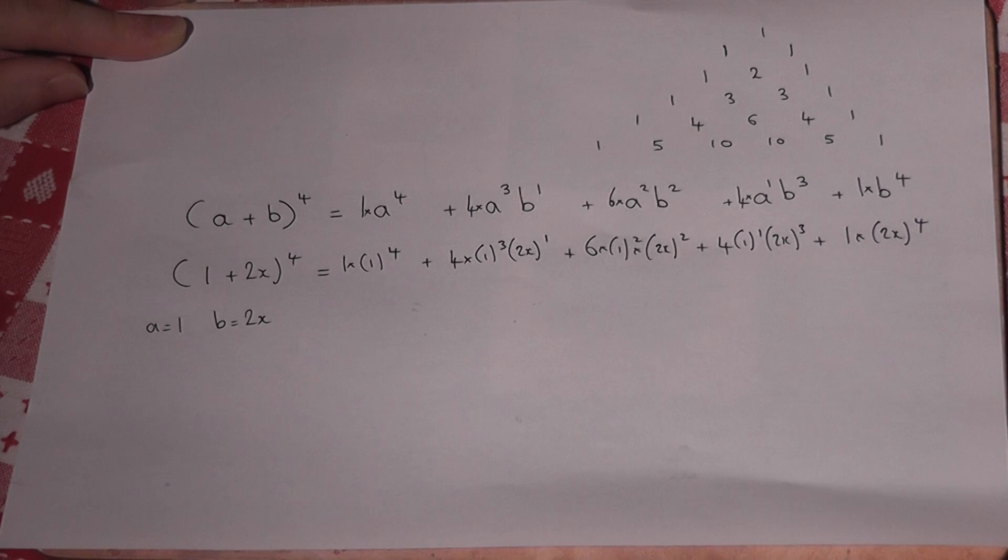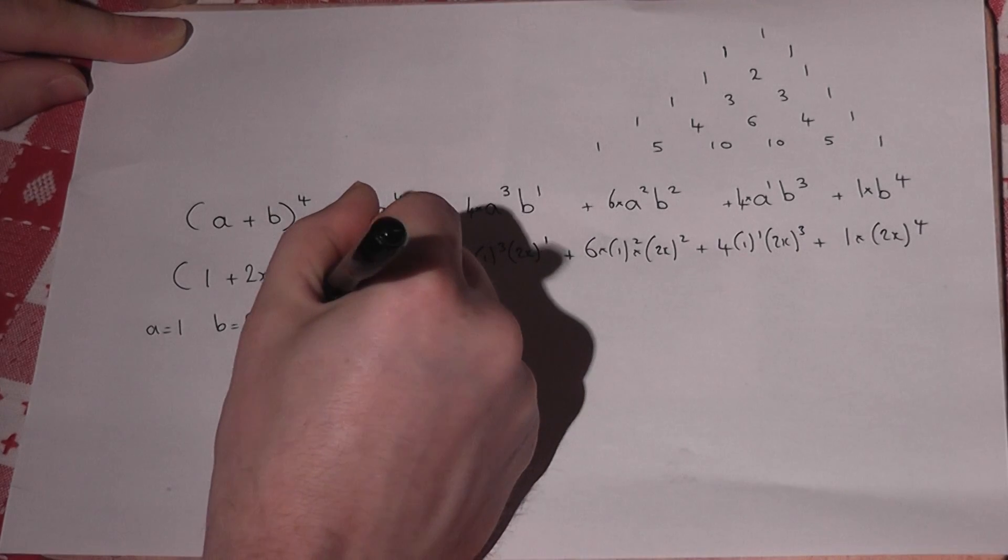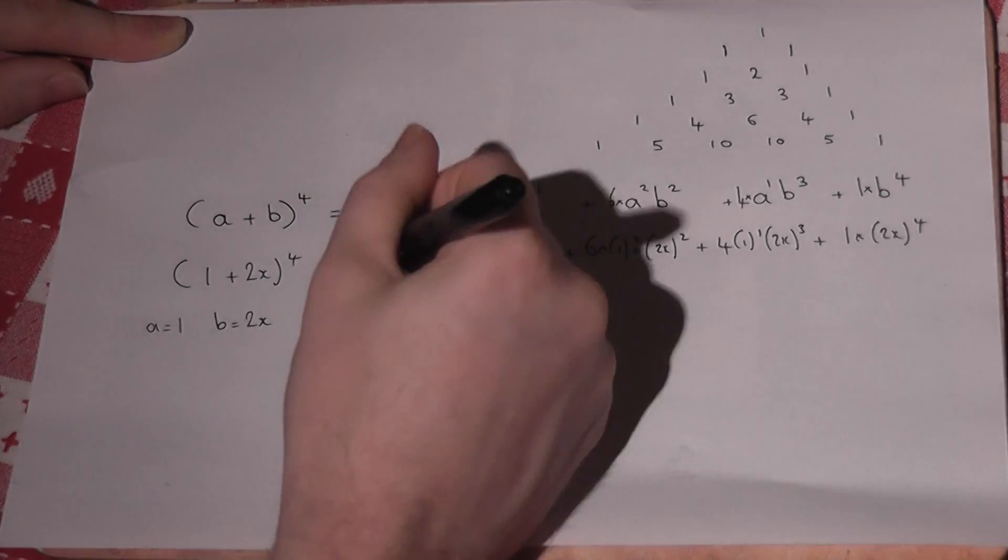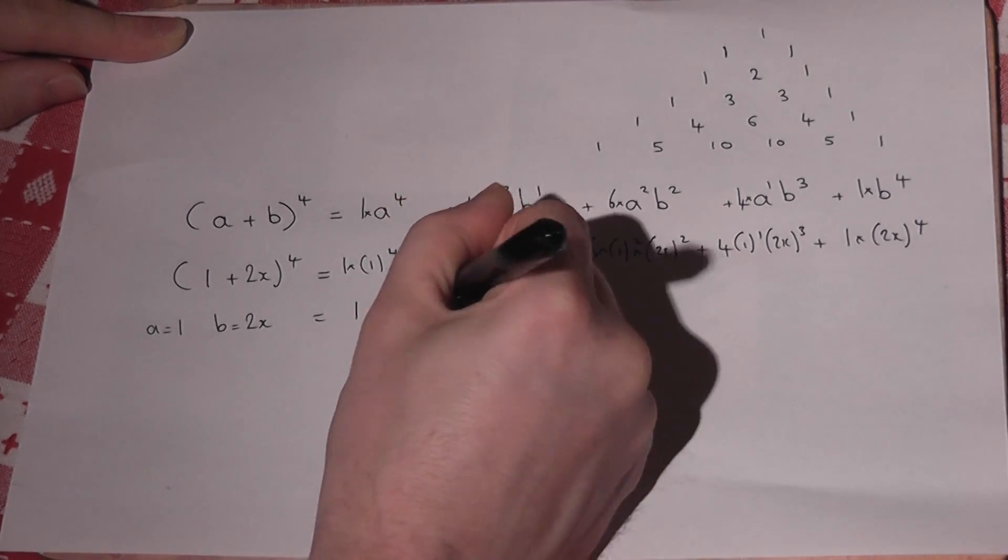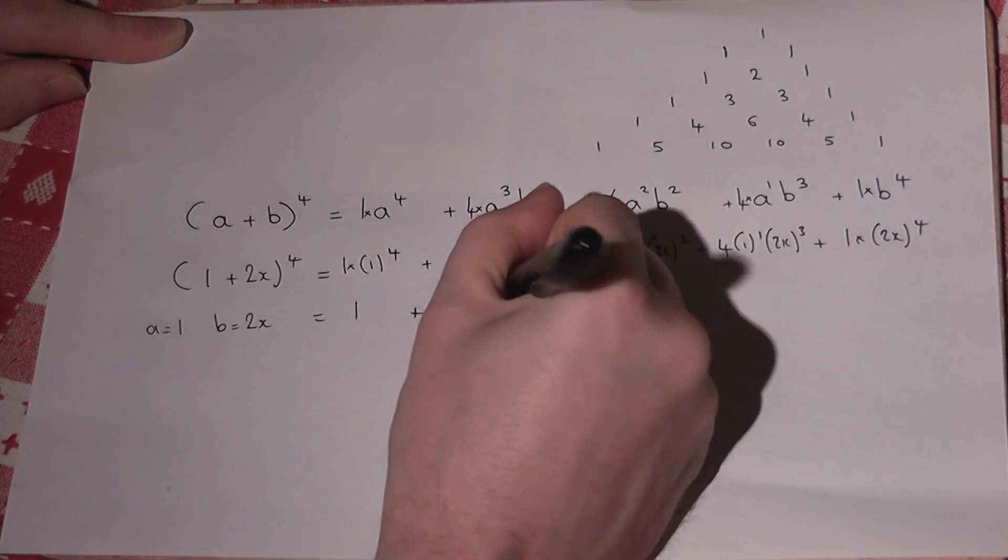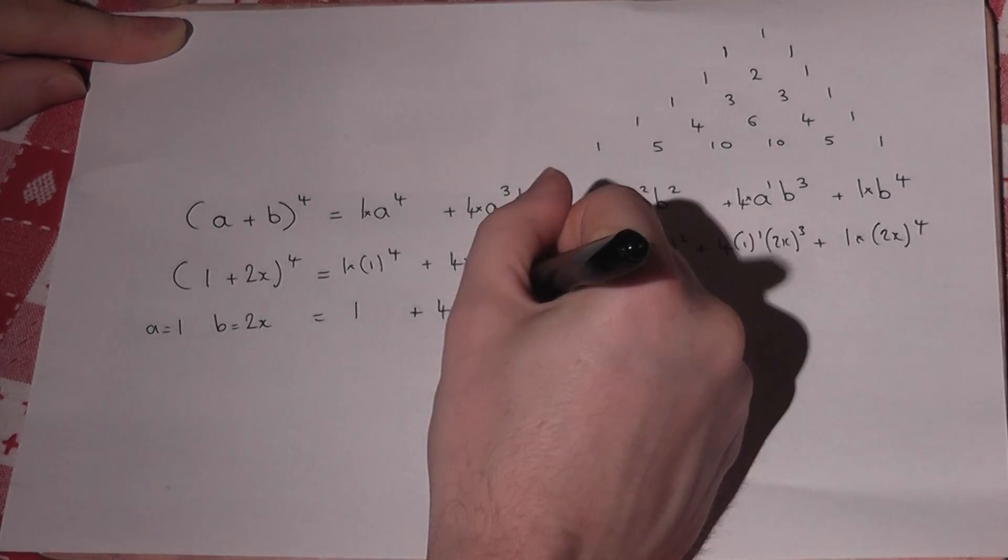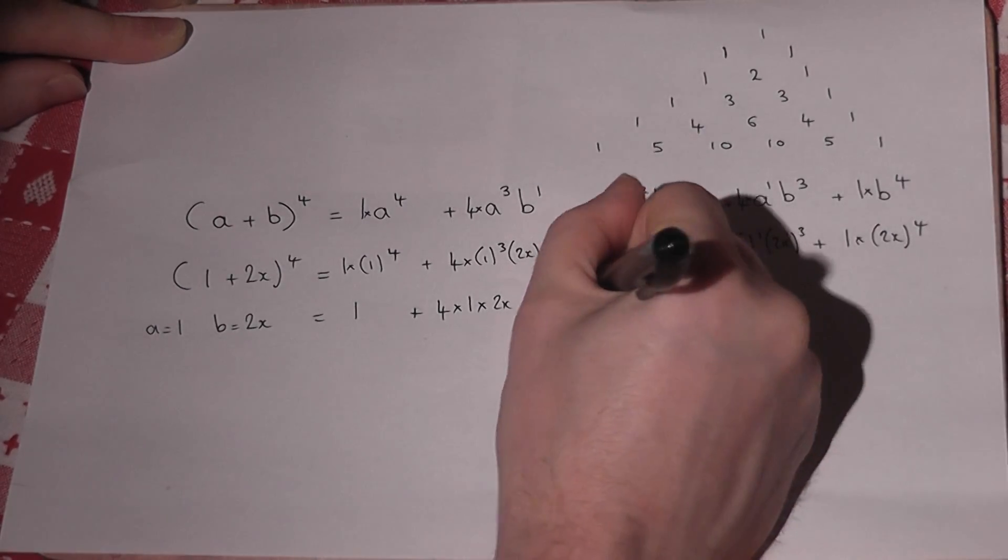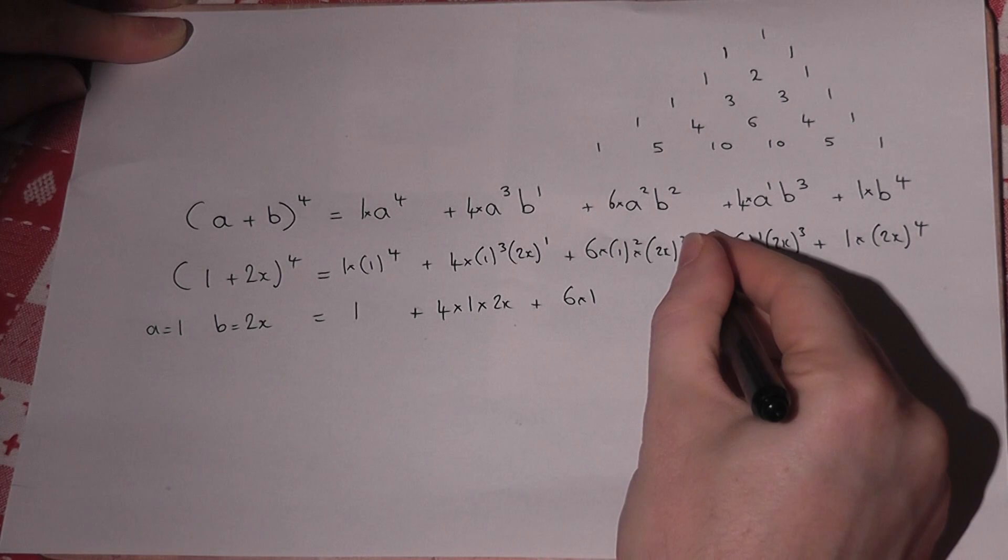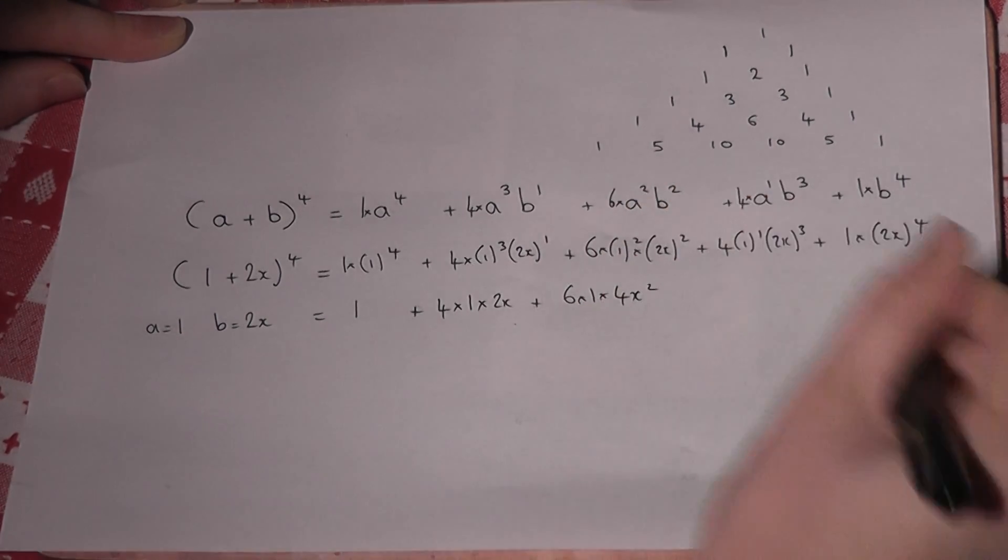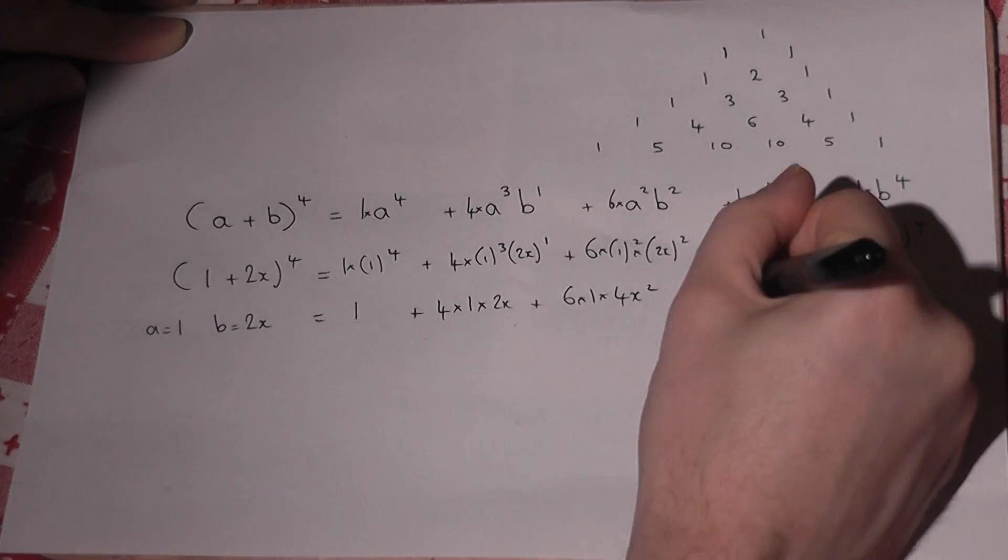I then go through each part in turn and work it out. So 1^4 is 1, so that whole thing now is just 1*1 which is 1. I've got 4, 1^3 is 1, and 2x to the power of 1 is just 2x. Then it's 6, 1^2 is 1, now 2x squared, 2^2 is 4, so it's 4x^2.